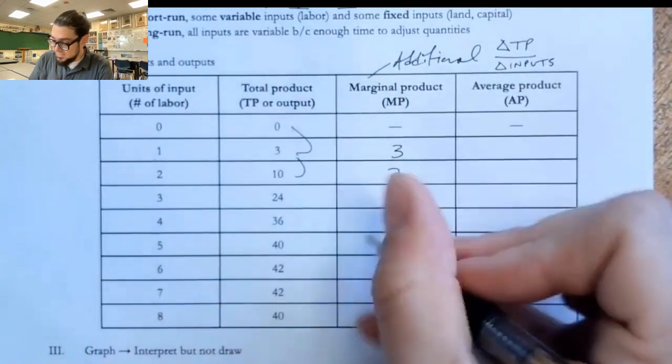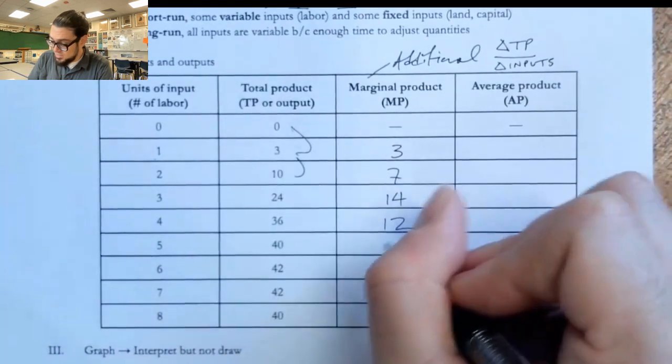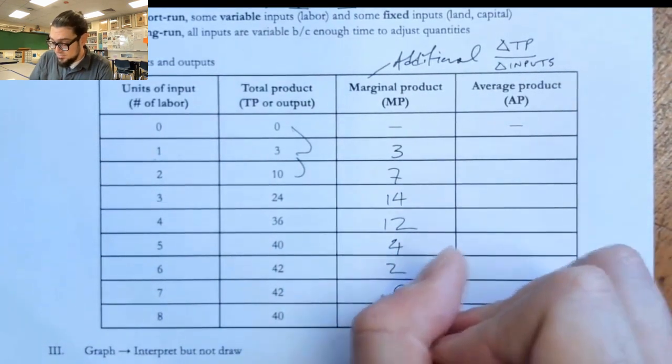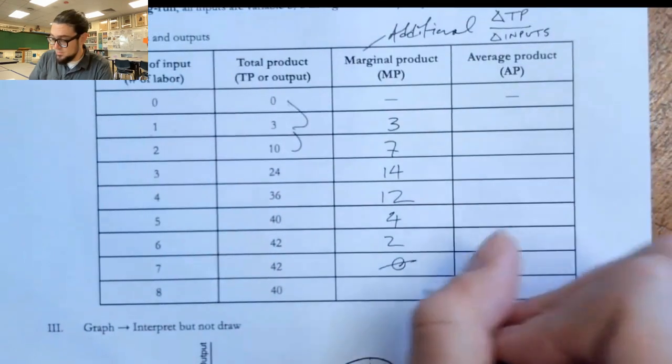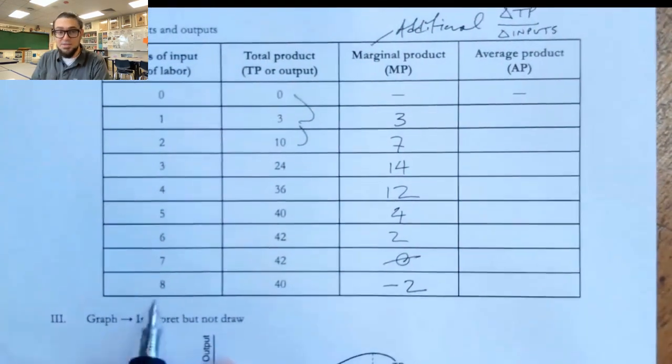And so for this next one, it's going to be seven. It's just the change, because we'd have change in input one, change in output seven. And then the rest of these, we're just going to do quickly here: 14, 12, four, two. And then here, you see, we get zero marginal product for that worker. Then we actually lost some product when we hired the eighth worker.